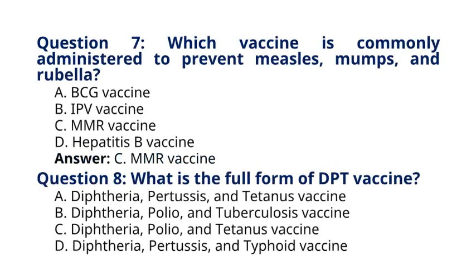Question 7. Which vaccine is commonly administered to prevent measles, mumps, and rubella? A. BCG vaccine. B. IPV vaccine. C. MMR vaccine. D. Hepatitis B vaccine. The correct answer to question 7 is option C, MMR vaccine. The measles, mumps, rubella, MMR vaccine is commonly administered to provide immunity against measles, mumps, and rubella viruses.